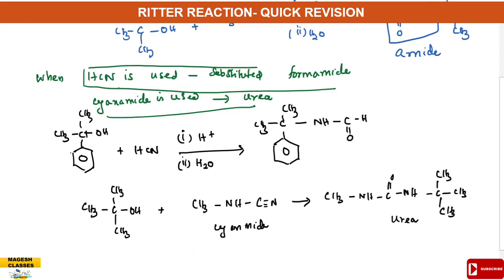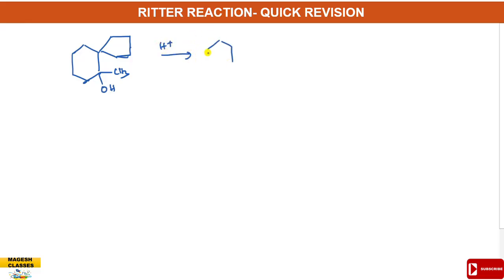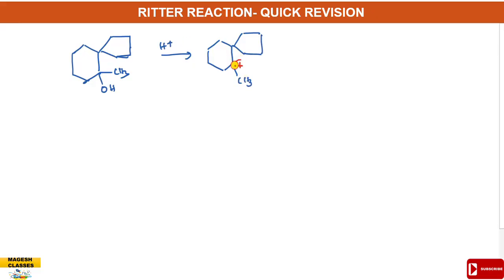In some cases, the formed carbocation undergoes rearrangement. See this example. Here, the tertiary alkyl group is present. First, in the presence of acid, you get a carbocation. The carbocation is formed at this center, and there is a methyl group. In some cases, this carbocation undergoes rearrangement — that is, ring expansion takes place.